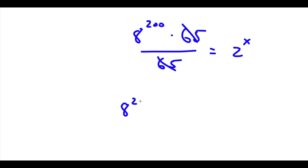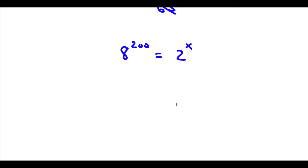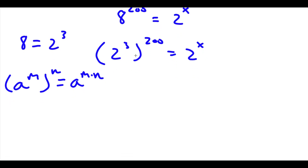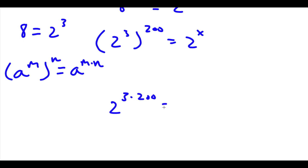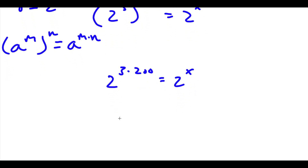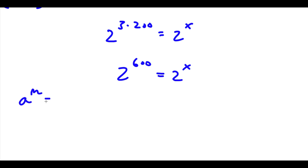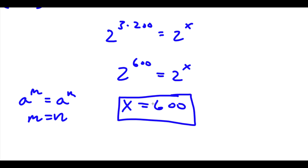So now I have 8 to the power of 200 is equal to 2 to the power of x. Now 8 is equal to 2 to the power of 3. So if I substitute in 2 to the power of 3 for 8, I get 2 to the power of 3 to the power of 200 is equal to 2 to the power of x. Now using the property a to the power of m to the power of n equals a to the power of m times n, 2 to the power of 3 to the power of 200 equals 2 to the power of 3 times 200, which is 2 to the power of 600, equal to 2 to the power of x. Since the bases are equal, the exponents must be equal, so x is equal to 600. That is our answer.